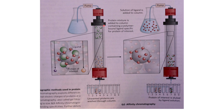Affinity chromatography uses a ligand bound to the column that attaches specifically to the protein of interest. Unwanted proteins wash through, and then a ligand homolog is used to elute the protein of interest. Instead of charge or size, affinity chromatography exploits a quality specific to the protein, such as an enzyme's binding characteristics, to form a specific interaction and then recover the protein of interest.